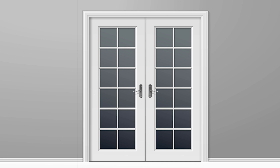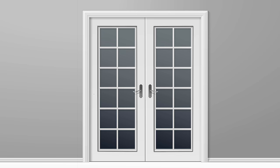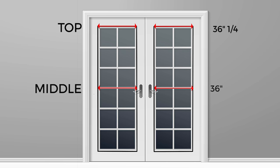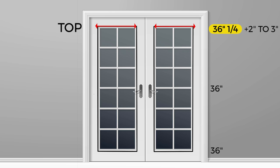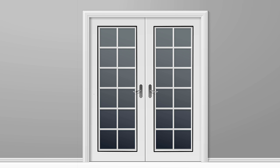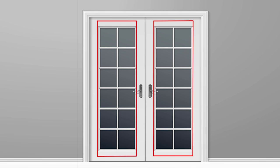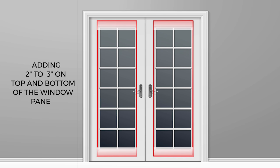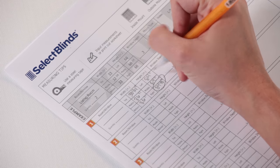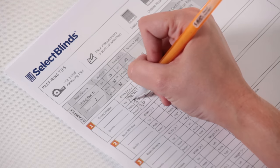Measure the width of the glass inside each door across the top, middle, and bottom. Take the largest width and add two to three inches to it. Same for the height — measure top to bottom on the left, middle, and right, adding two to three inches above and below the top and bottom of the window pane. Use the largest width and height for your order.